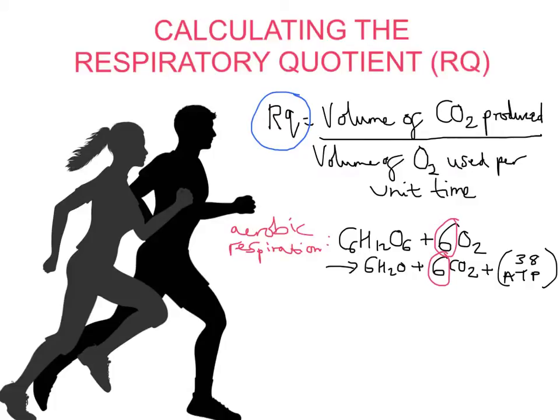So the RQ for this reaction, therefore, would be 6, for the volume of CO2 produced, divided by 6, volume of O2 used per unit time. So that would equal 1. So we have an RQ, a respiratory quotient value of 1.